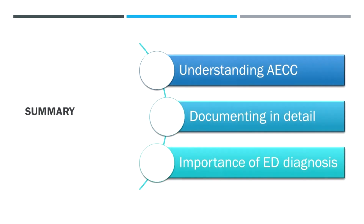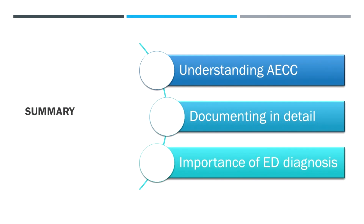To summarise what we've covered today: we've talked about the Australian Emergency Care classification and how that's distinct from the diagnostic related group classification, and the essential elements that go into coding an AACC presentation. We've talked about time of treatment commenced, as well as the importance of a very specific and accurate ED principal diagnosis. We've also talked about the detail that's really valuable in the way we document clinical notes within emergency. Thanks very much for watching.